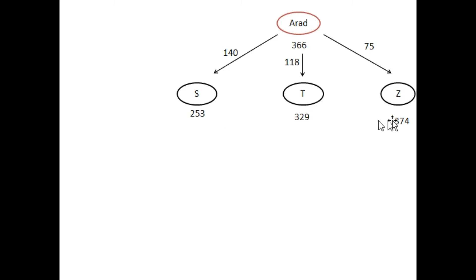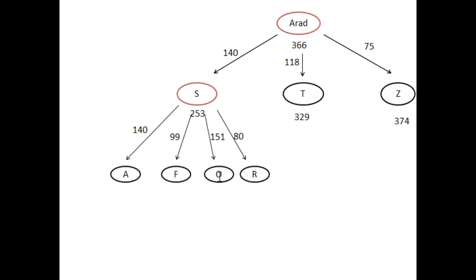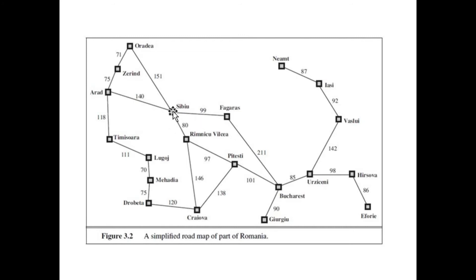We will explore node S. S is directly connected to R, F, and also node A — because our graph is not a directed graph. S is directly connected to F, S is directly connected to R, and F is connected to O and A. The distances between these cities are 99, 80, 151, and 140.